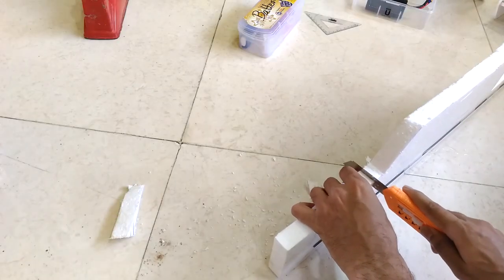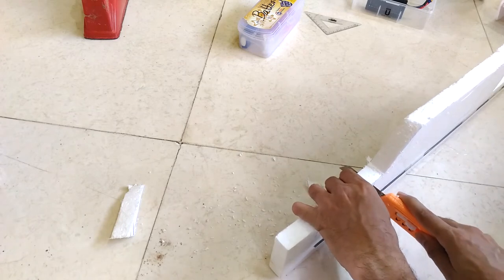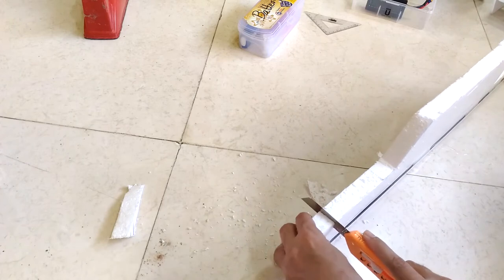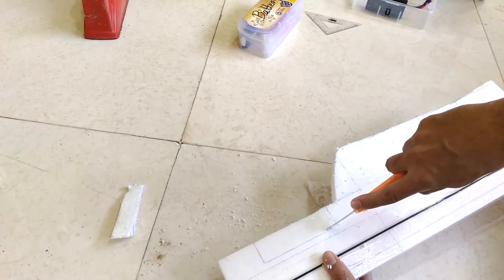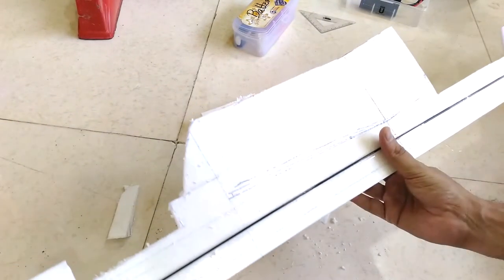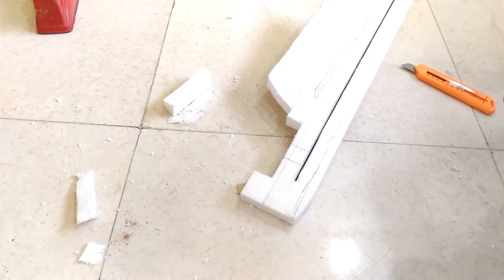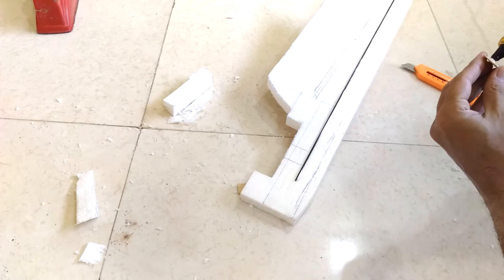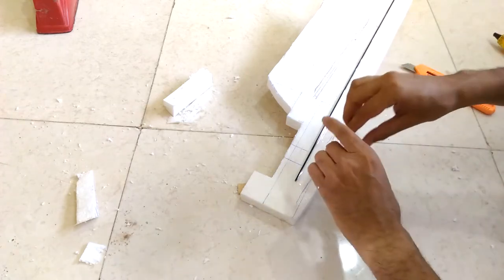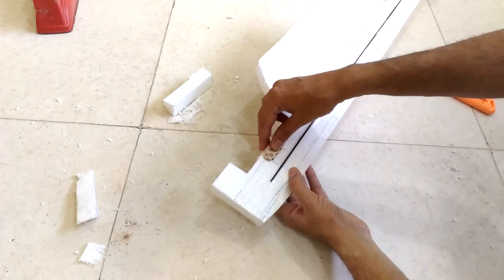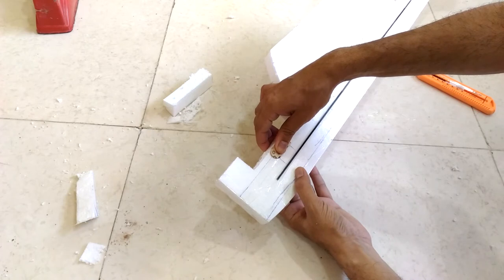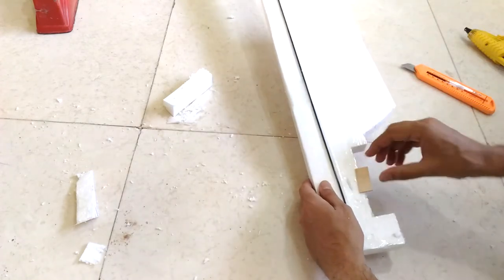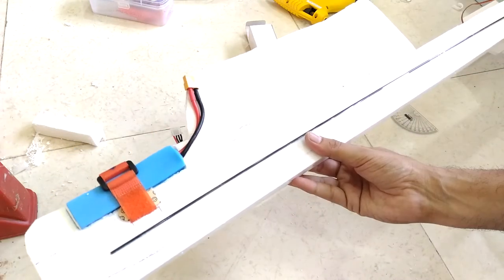Here I am just cutting the slot for the battery and I should have left this procedure at the end after checking the CG with the battery position. So this is the battery slot. The battery strap is going underneath this slot. The battery is secured.